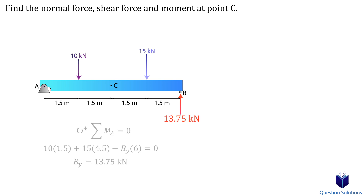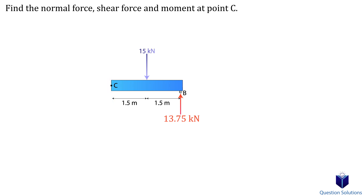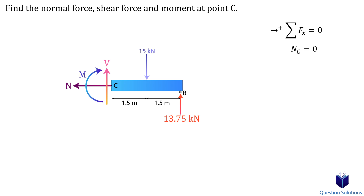We don't need to figure out the reactions at A because we're going to cut the member at C and only focus on the right side. At C we have the normal force, shear force, and the moment. To find the normal force we write an equation of equilibrium for the x-axis forces. Since there are no x-axis forces, the normal force is zero. To find the shear force we write an equation of equilibrium for the y-axis forces, involving the shear force, the 15 kilonewton force applied at the top, and the support reaction at B.